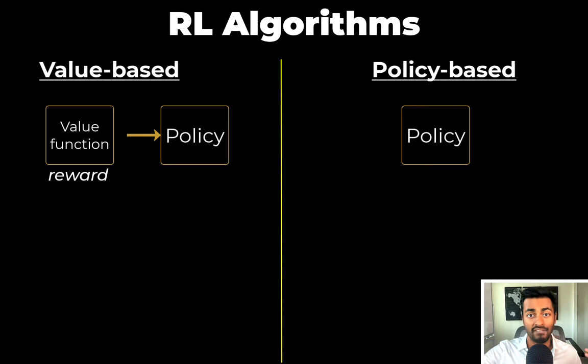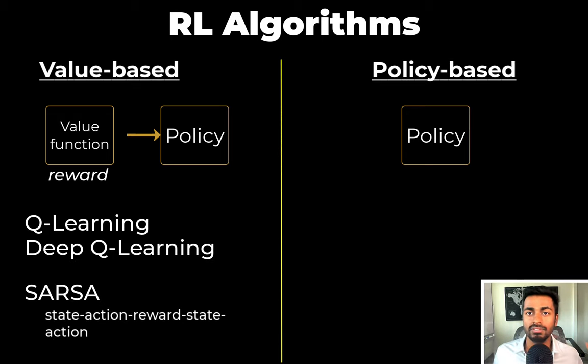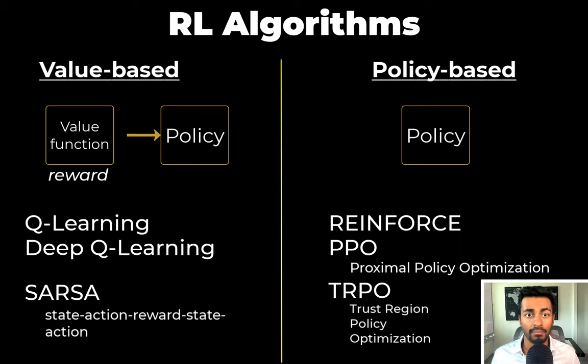Examples of value-based methods include Q-learning, deep Q networks, and SARSA, that is state action reward state action. Examples of policy-based methods include REINFORCE, PPO, that is proximal policy optimization, and TRPO, that is trust region policy optimization.